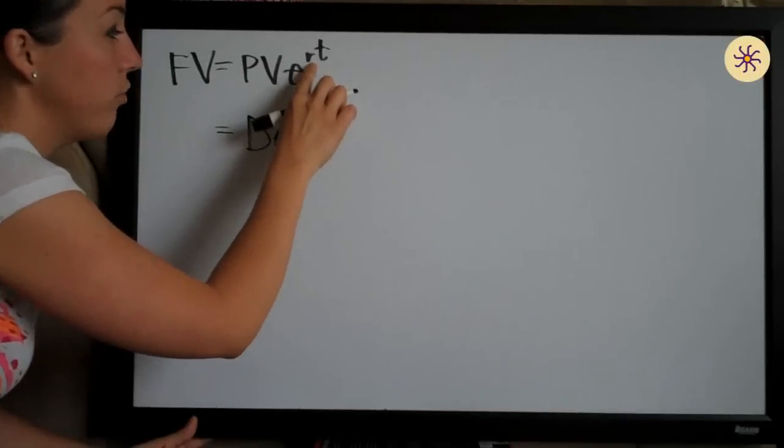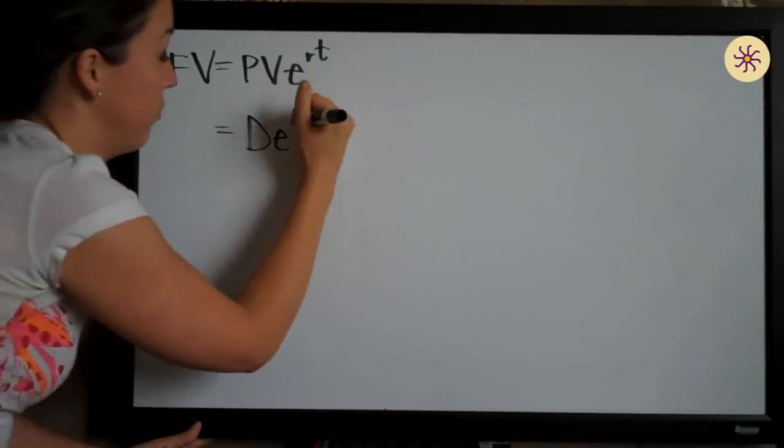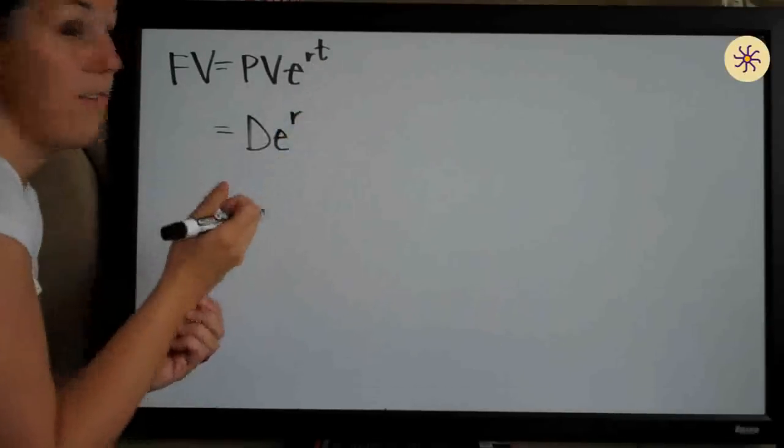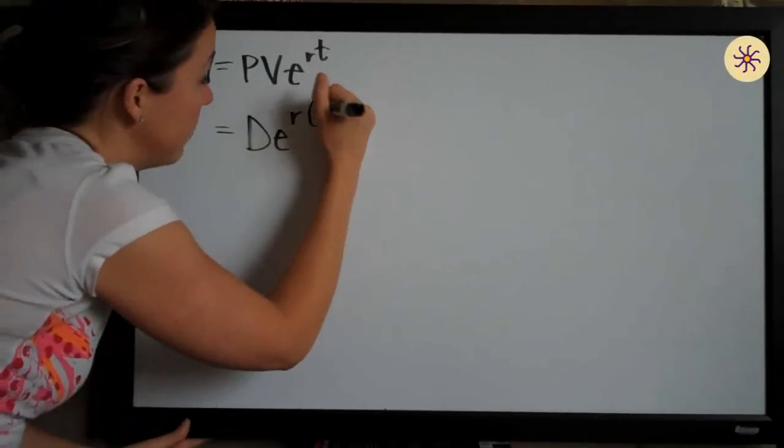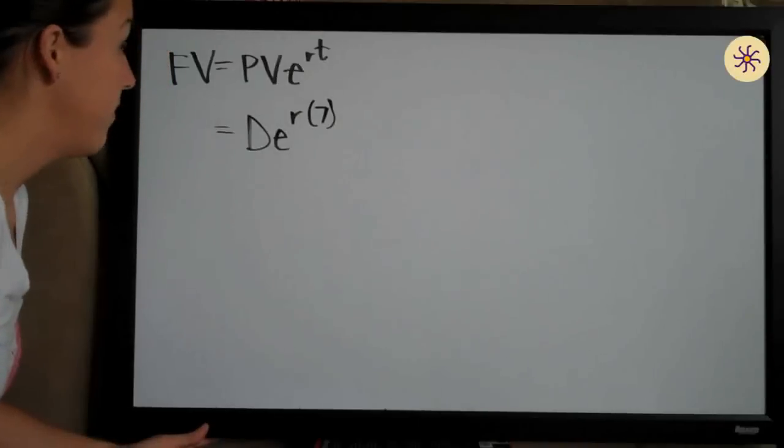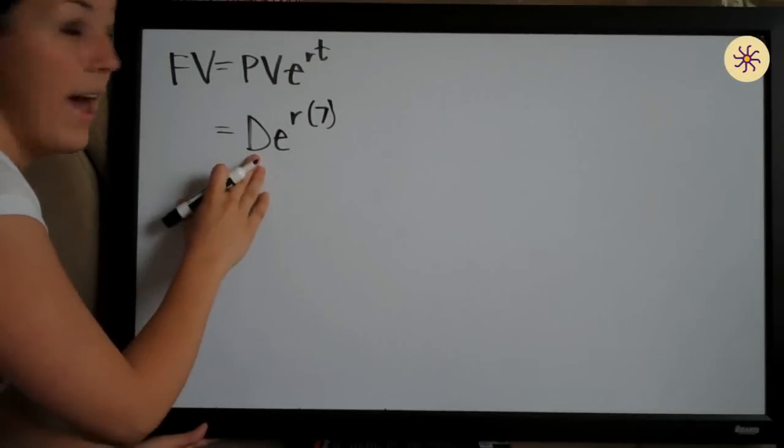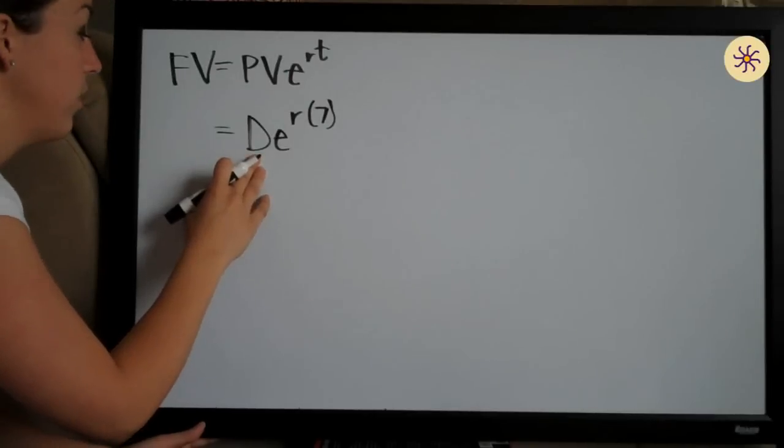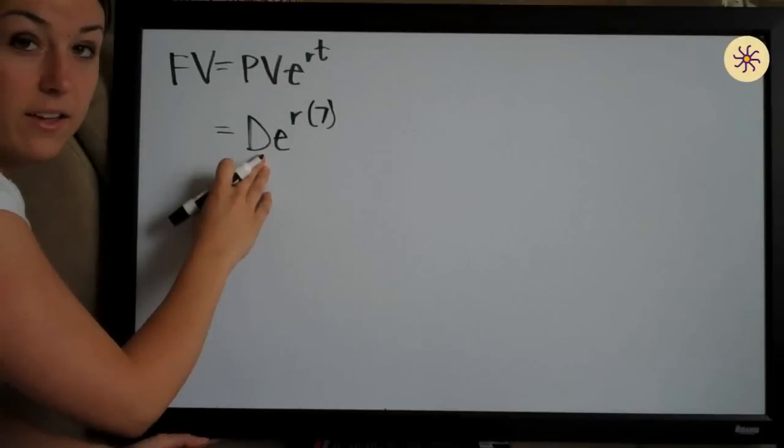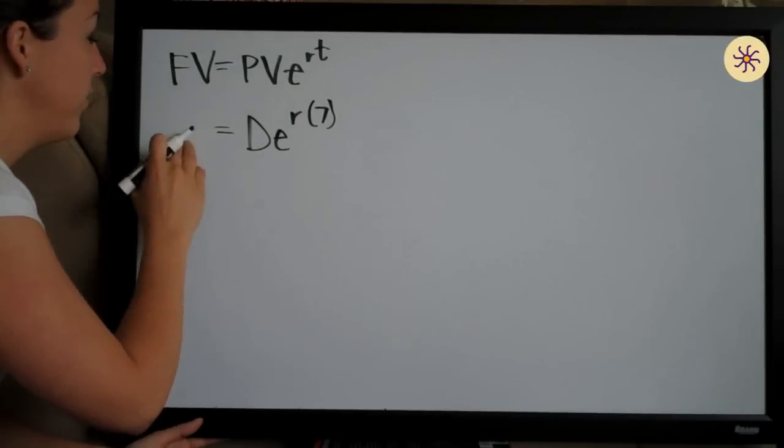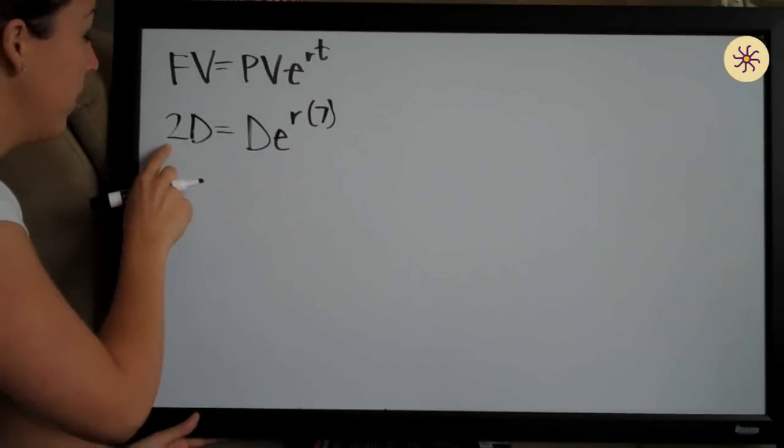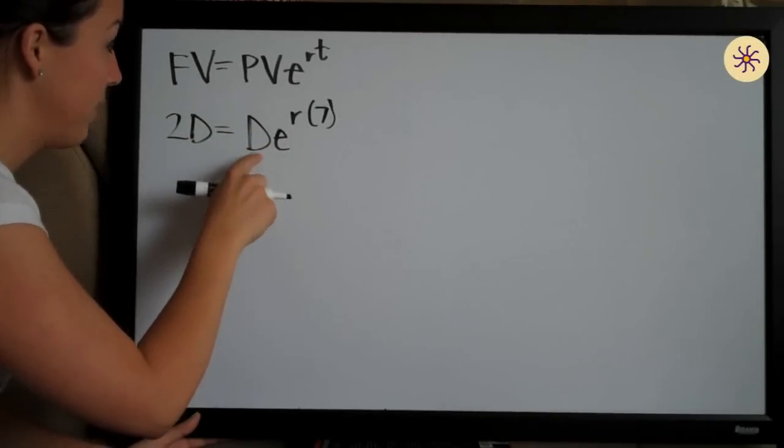We leave the E. We're trying to solve for the interest rate, the rate that has to be paid for this to happen. The time they've given us for the deposit to double is 7 years, so we plug in 7 years for T. They said our initial deposit has to double in 7 years, so if our present value is D and we're looking for double that, then our future value will be 2D.